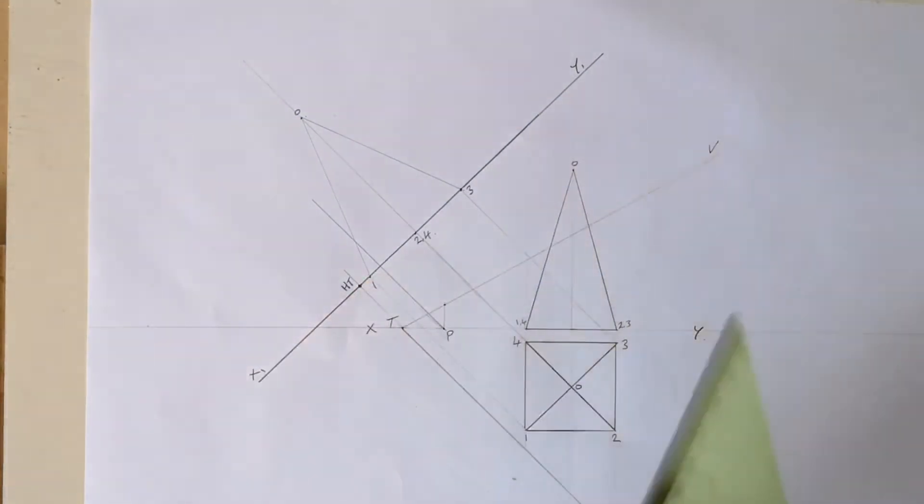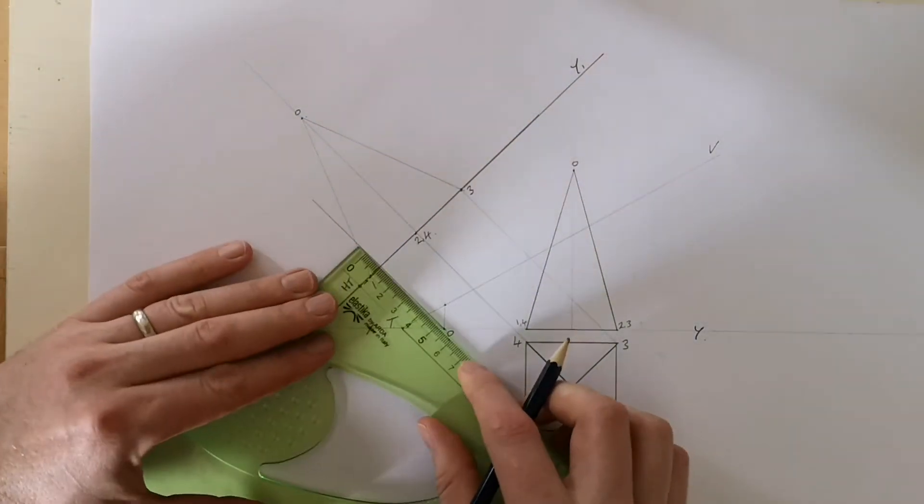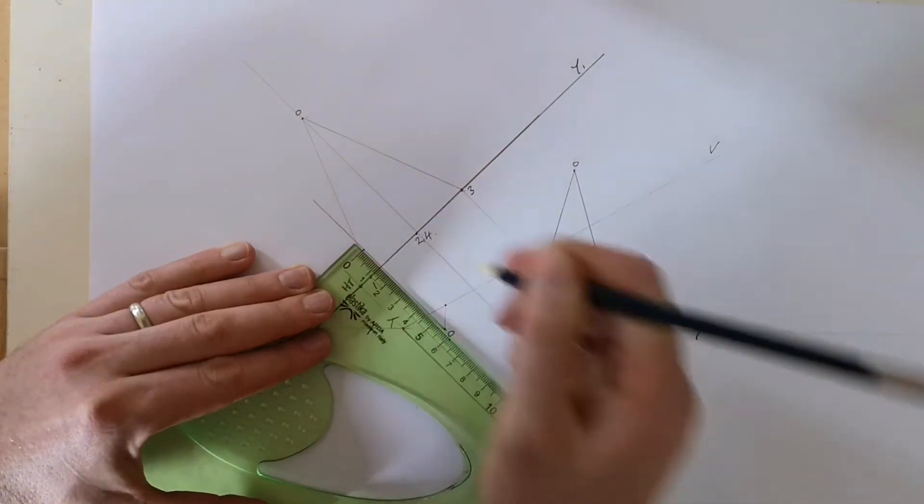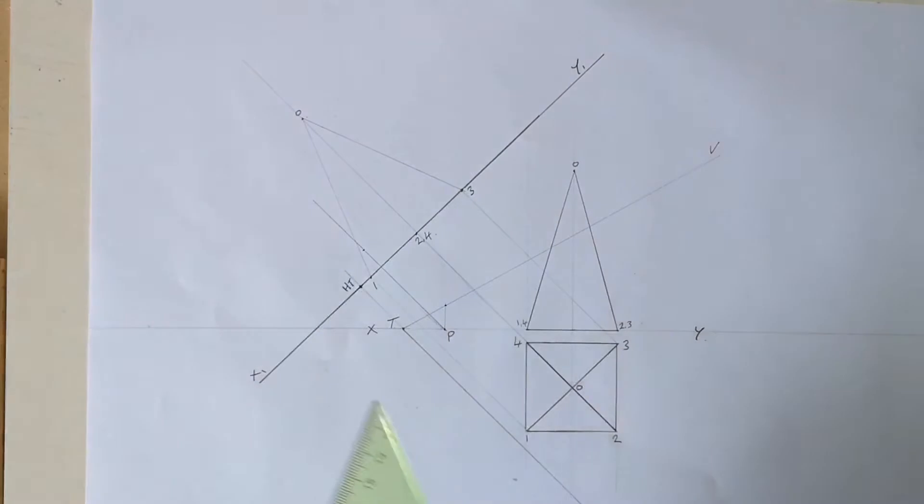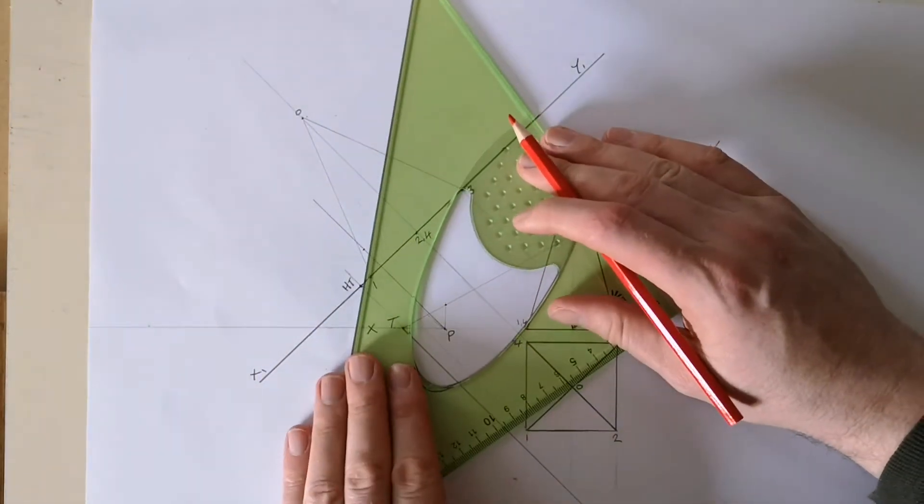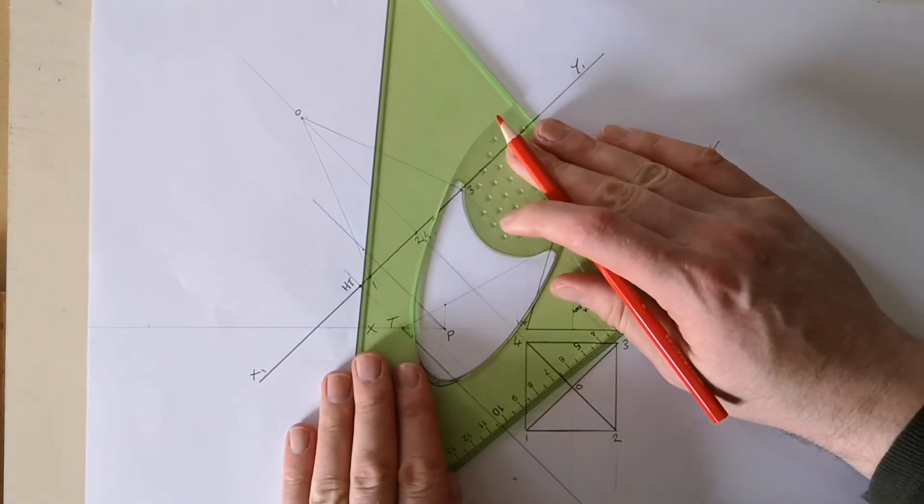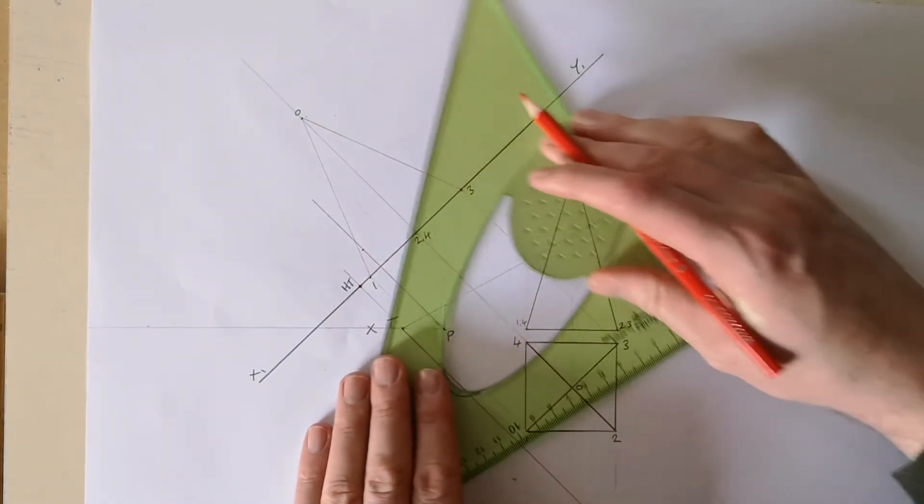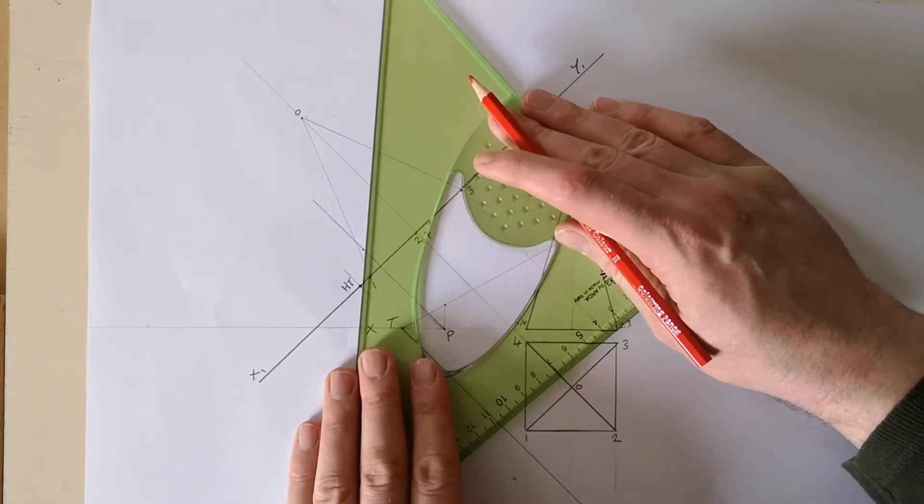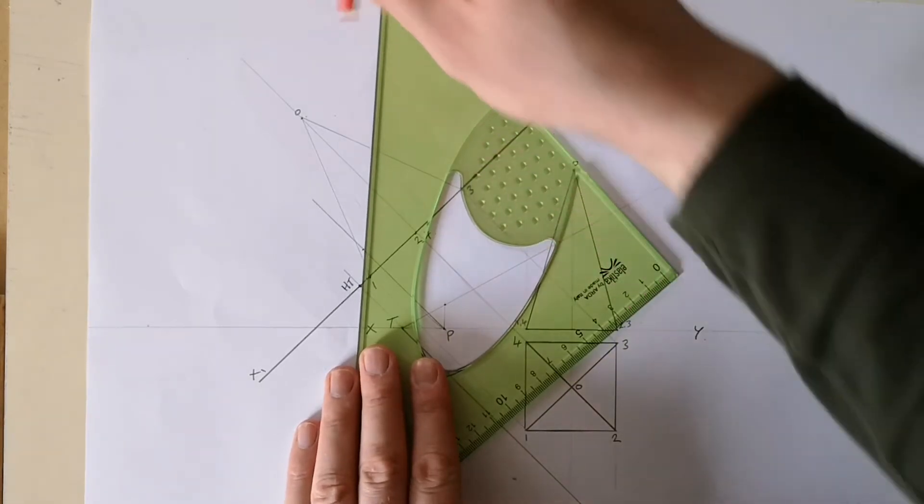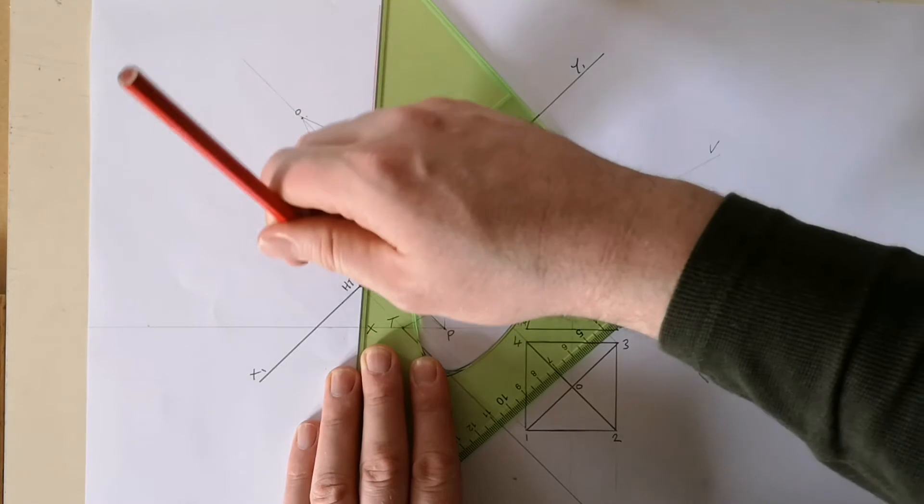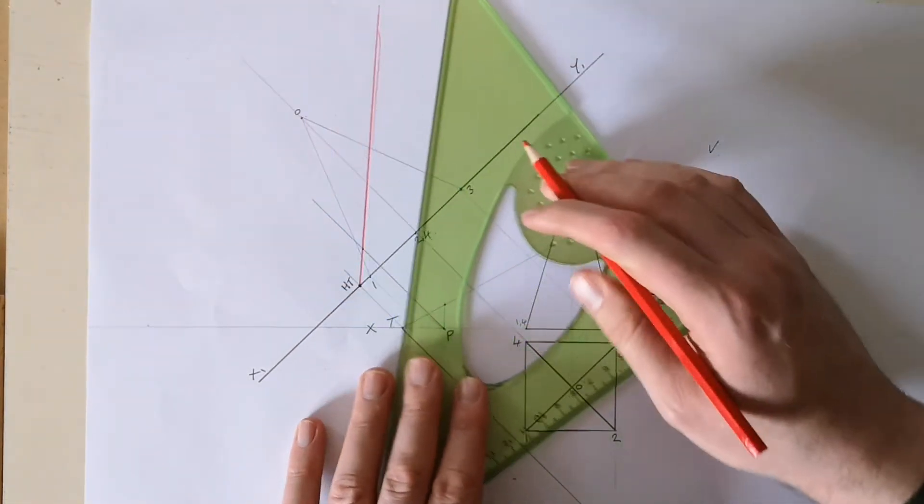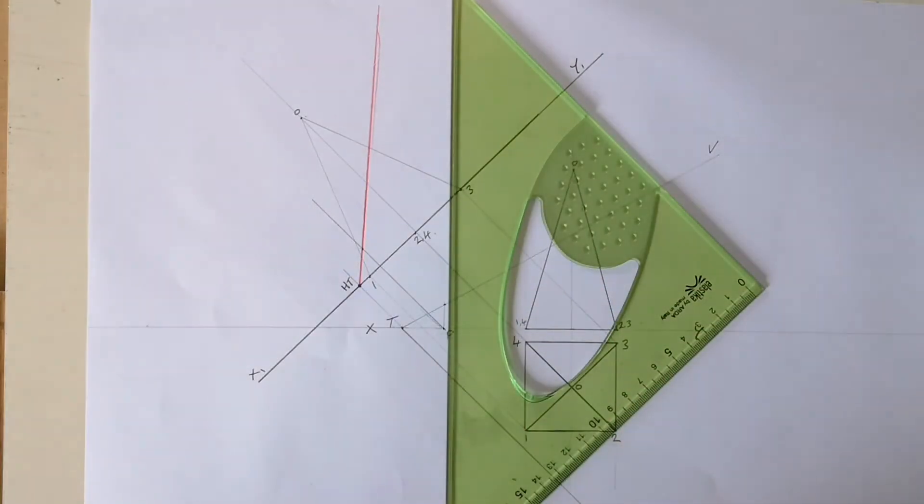So from here, from P, I'm going to come up 12 millimeters, mark that right there. I'm actually going to draw it in red here now. So if I join my HT line to this point and extend it out, that now gives me an edge view of the plane cutting through the pyramid.